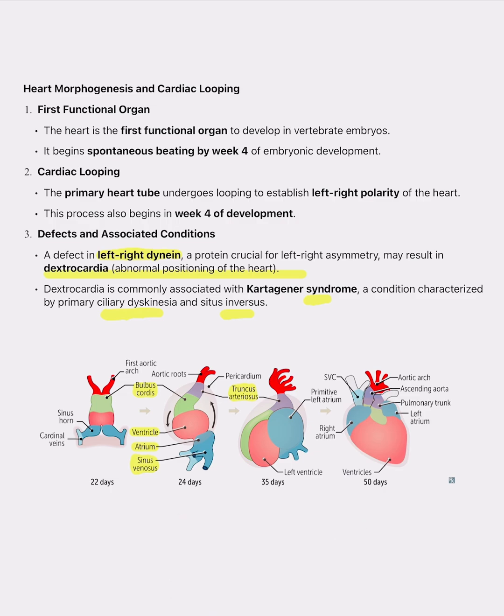One notable example is Kartagener syndrome, a condition involving defective cilia due to dysfunctional dynein. It is characterized by dextrocardia, recurrent respiratory infections, and infertility.